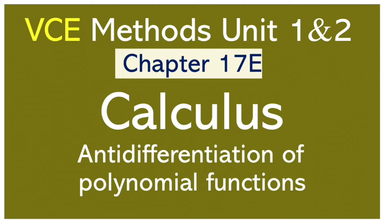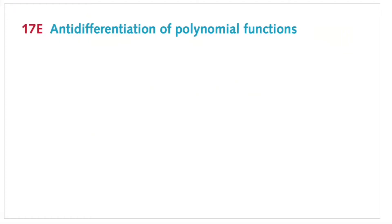Hi, in this video we'll be looking at 17e anti-differentiation of polynomial functions. Here is an easy example. We know that if we have a function f(x) = x², then the derivative of x² with respect to x is f'(x) = 2x. We bring the power to the front and reduce the power by one. We call this process differentiation.